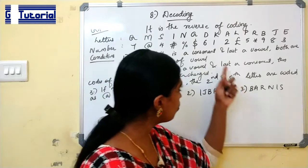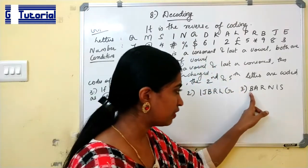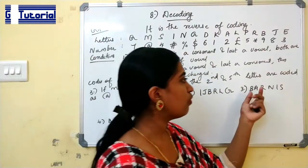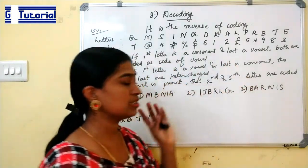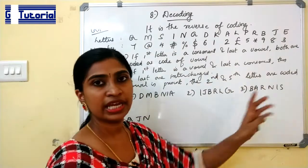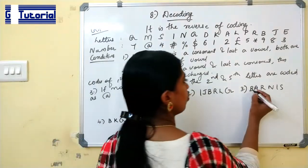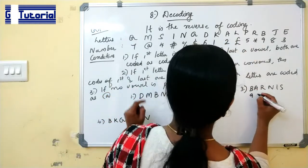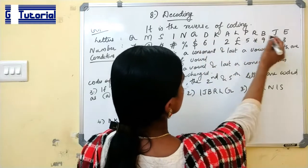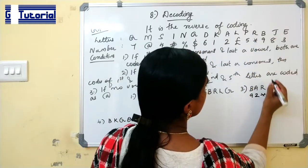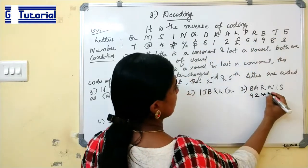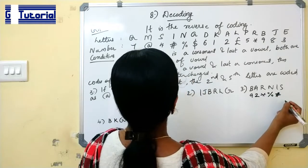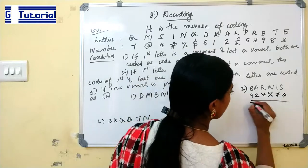This does not follow any of the rule. It is not starting with vowel, it is not ending in vowel, and here vowel is present. So these three conditions are not applicable in this question. So we can directly write the code. Code for B is 9, A is 2, R is star, N is percentage, I is hash, S is 4. So this is the code for this.